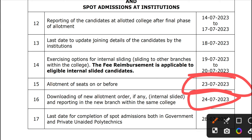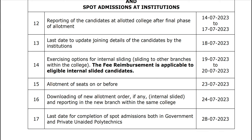In that college, you will have the other branch. If you have the date of allotment, you will have the date of allotment. This is the internal sliding. This is the information. Subscribe to the channel and like the video. Thank you.